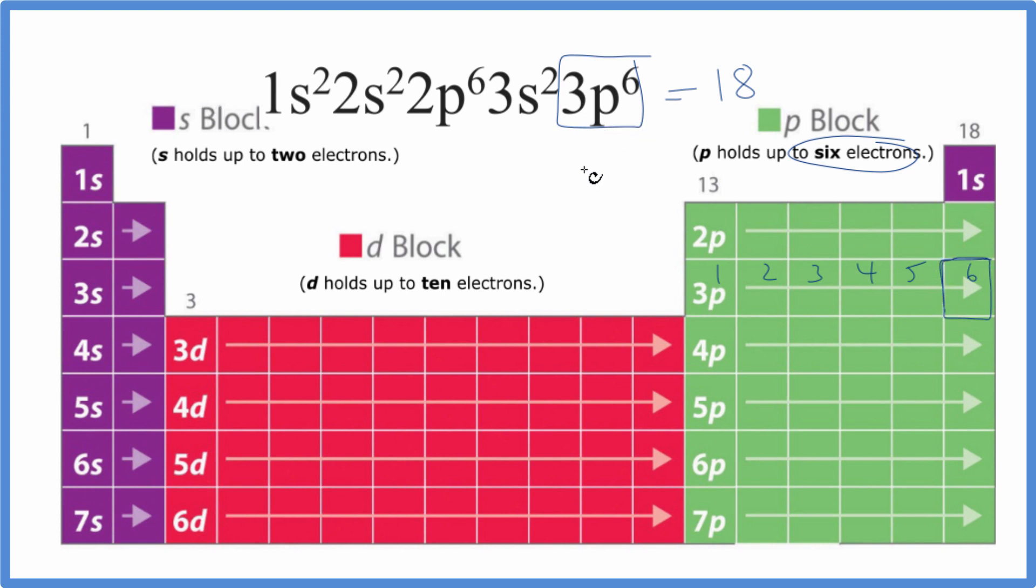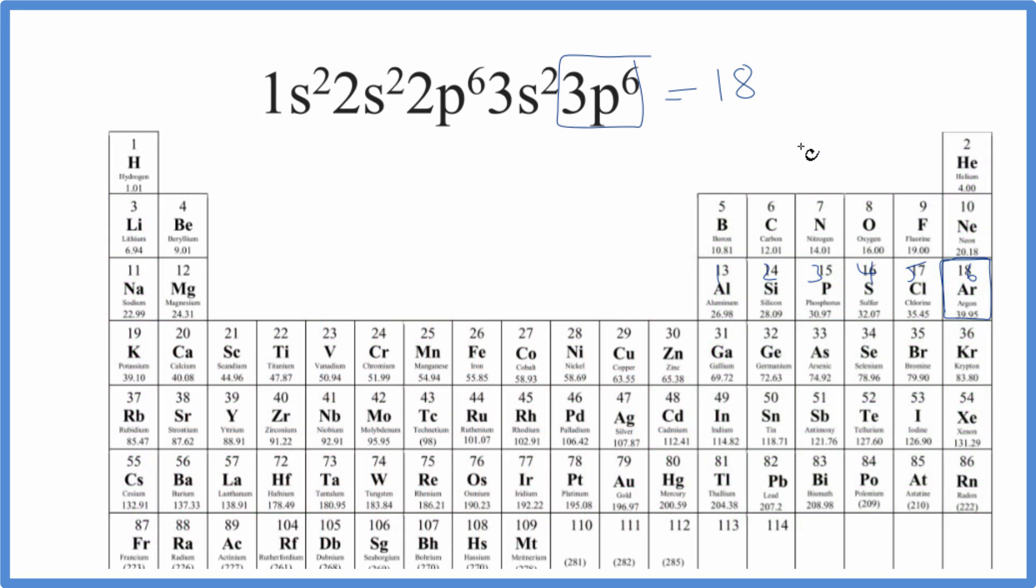Let's go back to the periodic table with the elements written in. So just like we found before, we have atomic number 18, which is argon. So the electron configuration for 1s2 2s2 2p6 3s2 3p6, that is argon.